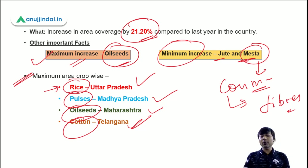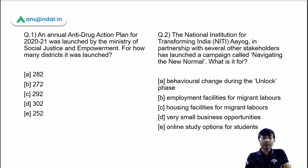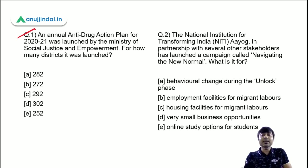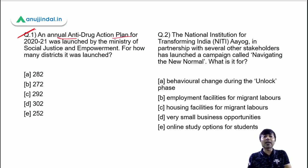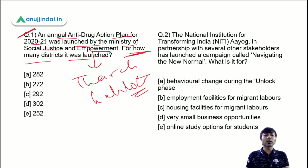Now let's do five quiz questions. Question 1: An annual anti-drug action plan for 2022, launched by the Ministry of Social Justice and Empowerment headed by Thawarchand Gehlot, the leader of Rajya Sabha — for how many districts was it launched? The correct answer is option B — 272 districts.